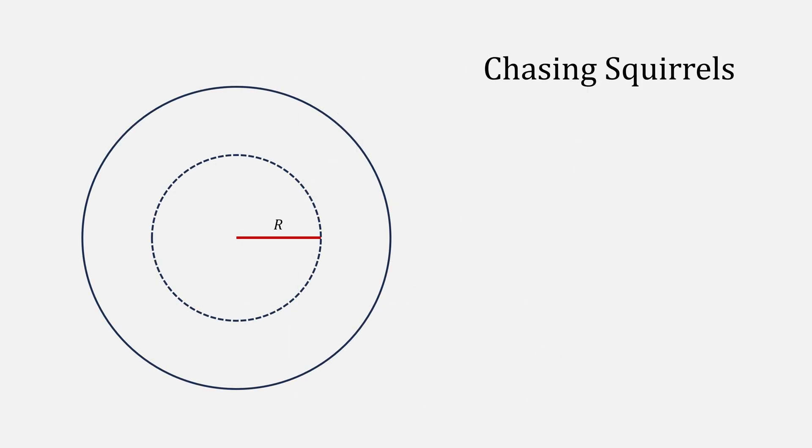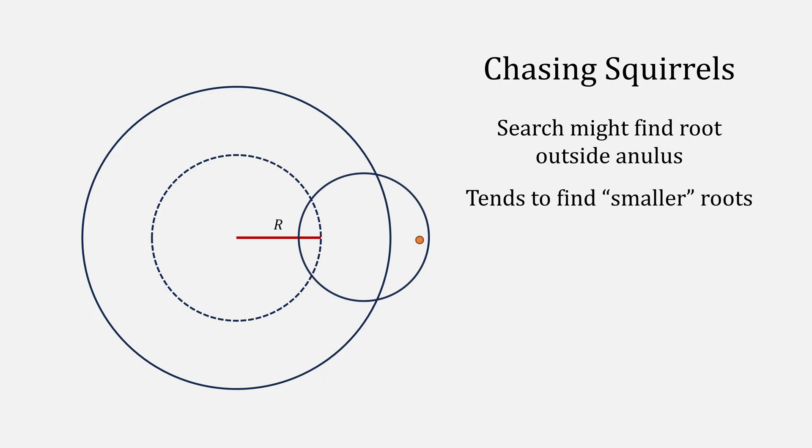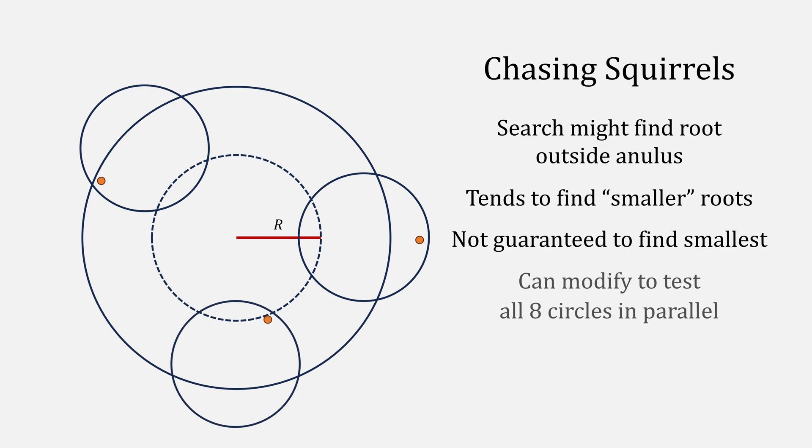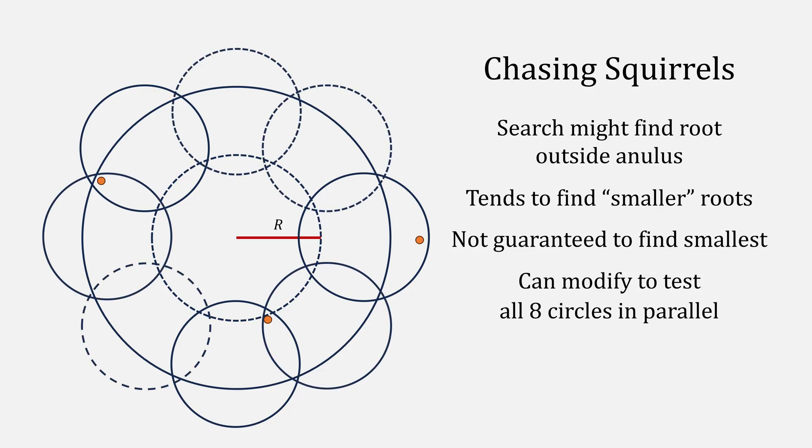There are some quirks to this method, though. It can find a root that is outside of your ring. I've illustrated it with this example. It can also tend to find smaller roots, such as this example, but it can't find the smallest root. Or I should say it's not guaranteed to find the smallest root because it doesn't know where the roots are in the ring. You can also try to modify this approach to test eight rings at once. Note, though, that there may be some overlap.